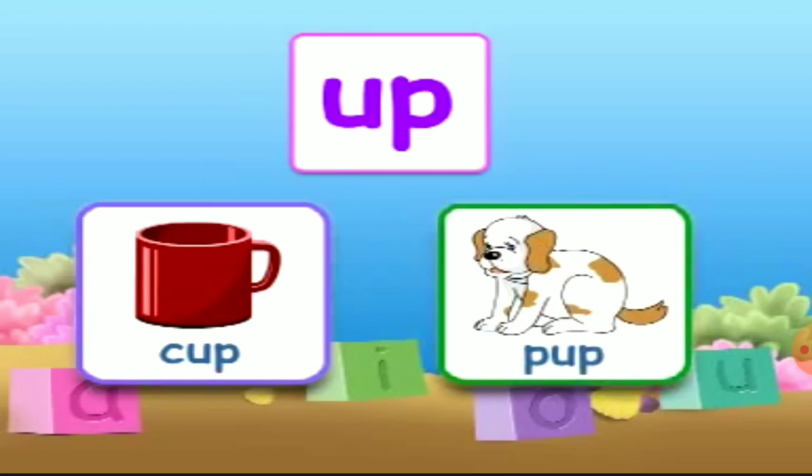So, friends, today what we learned? Vowels. How many vowels are there? Five: A, E, I, O, U. I hope you understand it. Thank you, bye-bye.